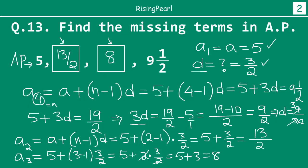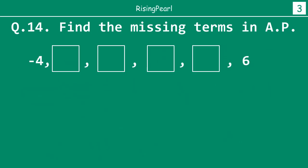Let's take a look at more examples. I hope you are following along at risingpearl.com and seeing how we use the nth term formula over and over again to find missing terms. The next question has four missing terms — quite a few! Find all the missing terms in this arithmetic progression. The first term a1 = −4 and the sixth term a6 = 6.